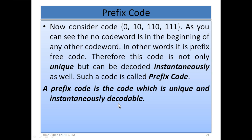Now consider the code {0, 1 0, 1 1 0, 1 1 1}. As you can see, no codeword is in the beginning of any other codeword — in other words, it is a prefix-free code. Whenever the decoder receives just one 0, it knows that it is 0. Similarly, 1 0 is not in the beginning of any other codeword, and 1 1 0 is also not in the beginning of any other codeword. So this is a prefix-free code.